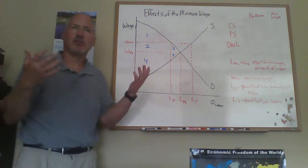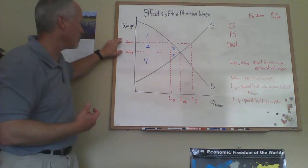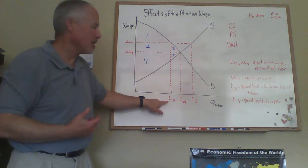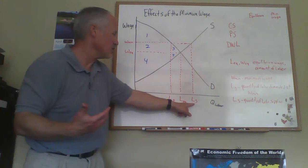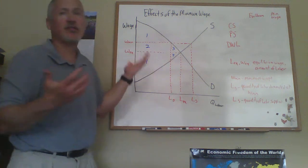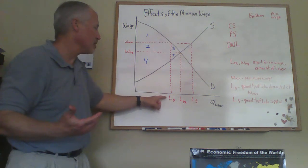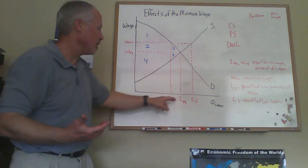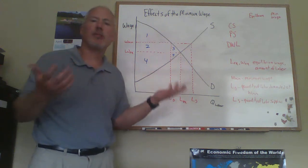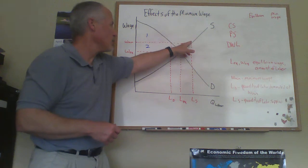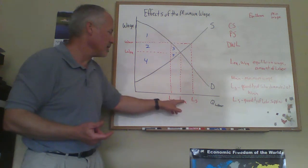If you remember from the principles, we covered a price above the equilibrium level. You read over to the demand curve and down, and that gives you the quantity demanded at that price. You read over to the supply curve and down, and that gives you the quantity supplied at that price. Since the demand curve slopes down, the quantity of labor demanded — remember, firms are demanding labor — would be lower than the equilibrium quantity. And since the supply curve is upward sloping, the quantity of labor supplied at a higher wage would be larger than the equilibrium quantity.